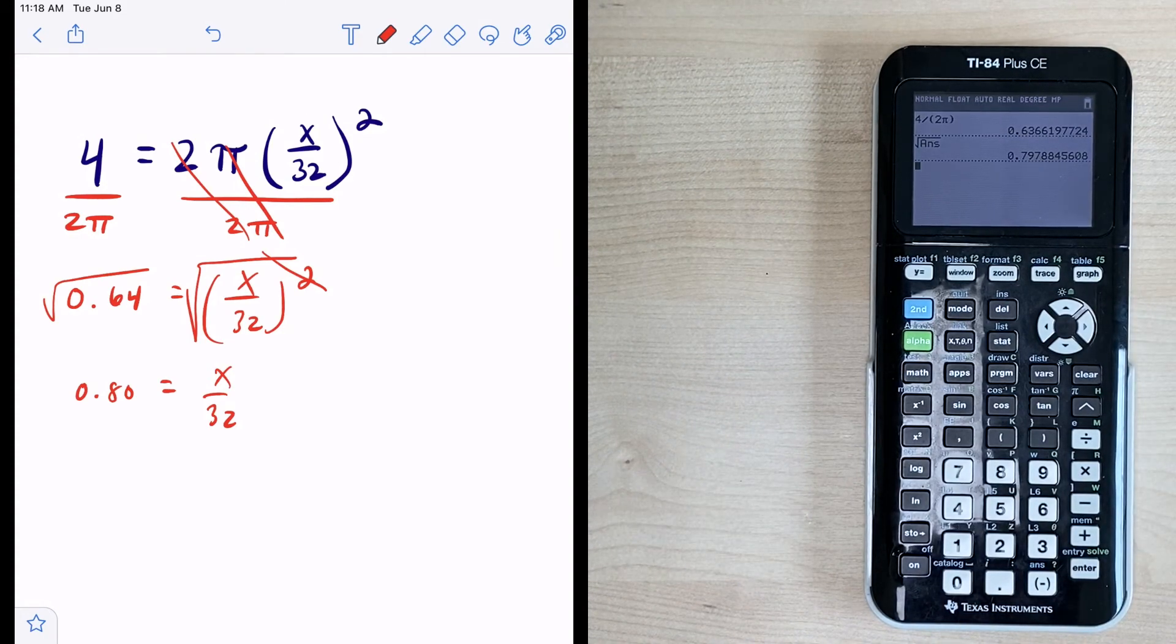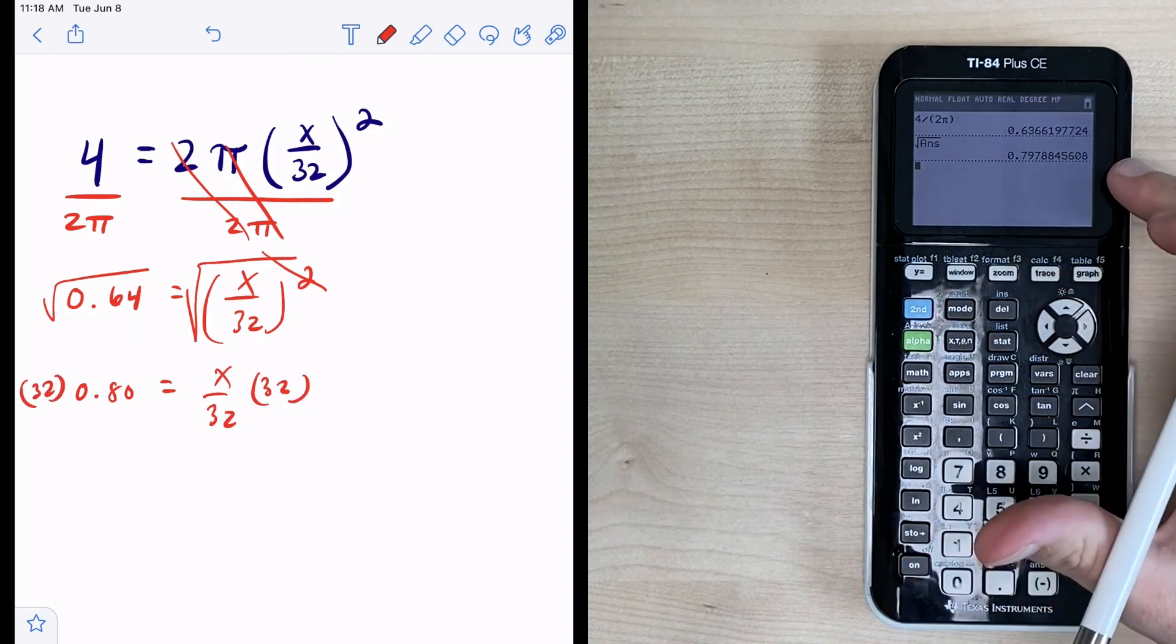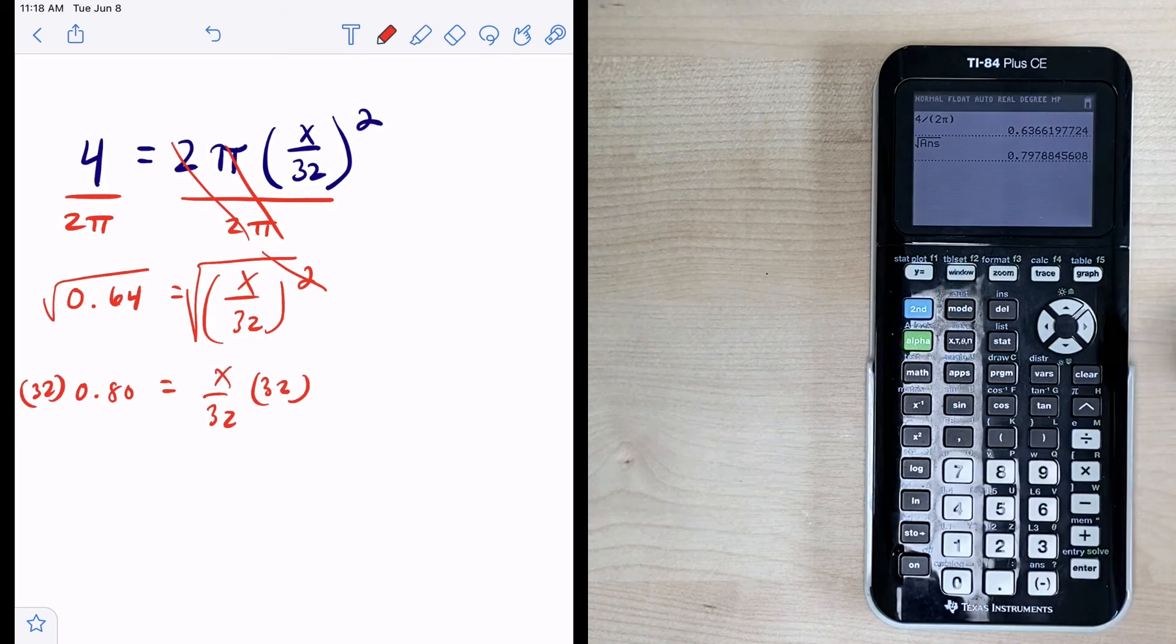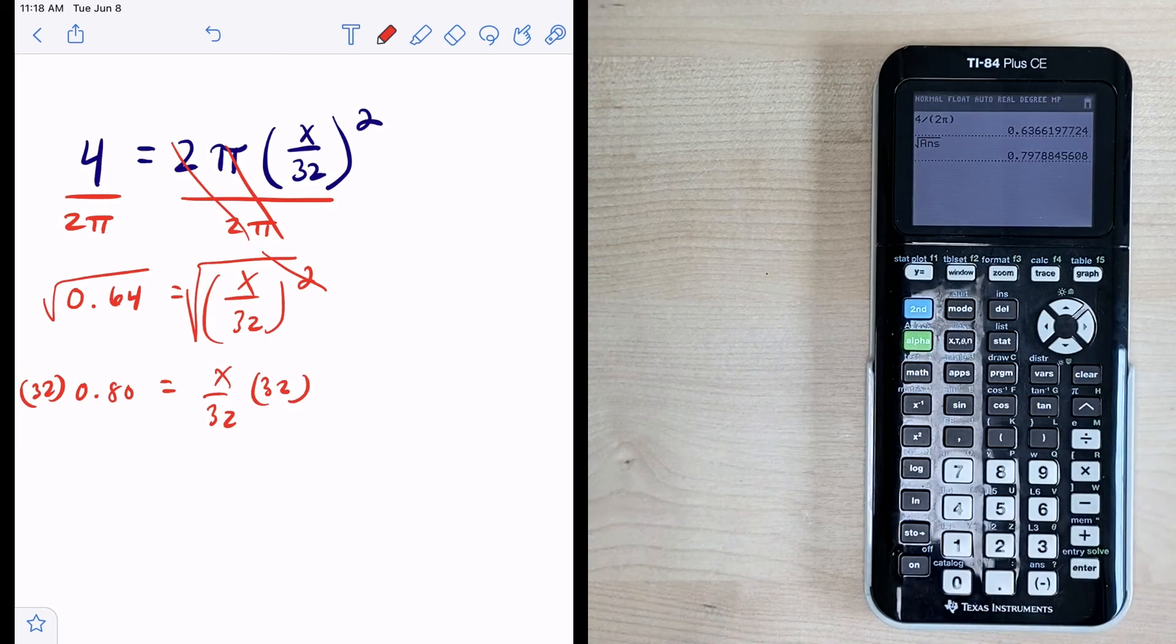Okay so now what would we do? We would multiply both sides by 32 to get our final answer. And so now we don't have to type this decimal and we definitely don't want to round it to 0.80.